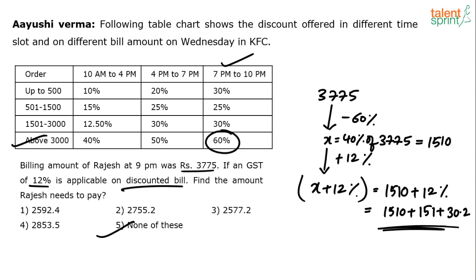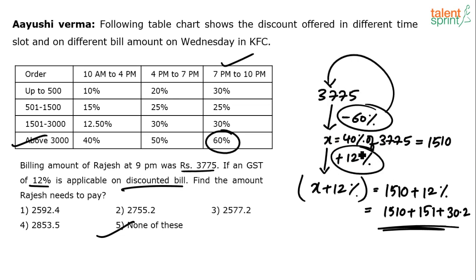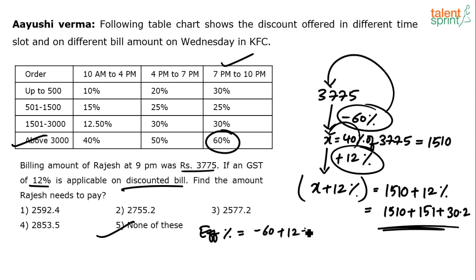Important warning: you cannot simply take 52% of 3775 by adding −60 and +12, because the percentages apply to different base values — 60% is on 3775, while 12% is on X. Alternatively, use the effective percentage formula: A + B + (A×B)/100, where A = −60 and B = +12.